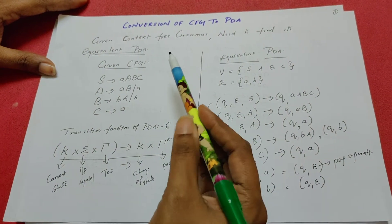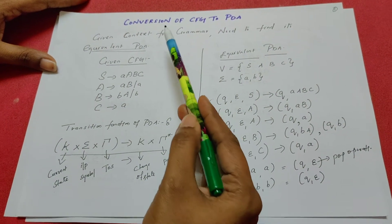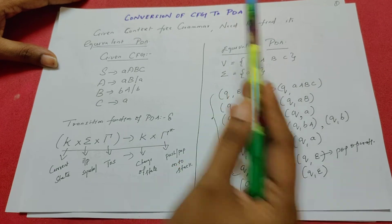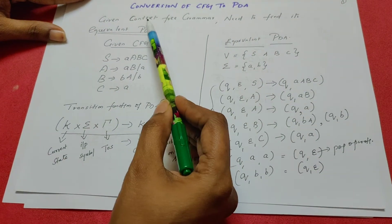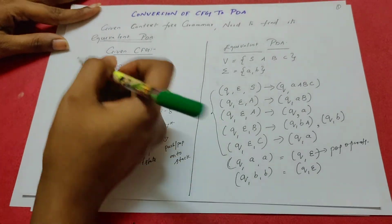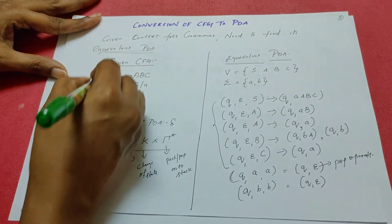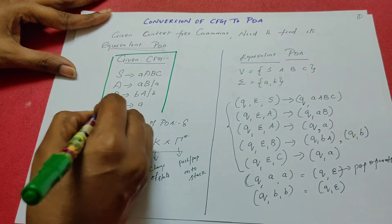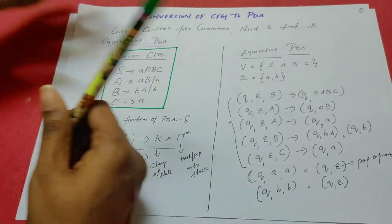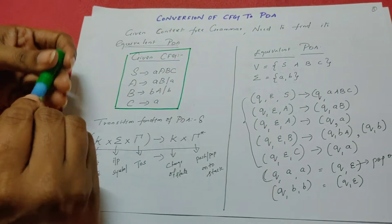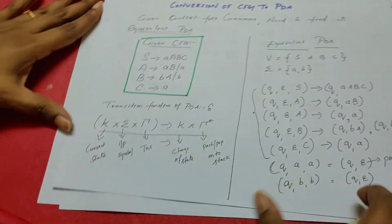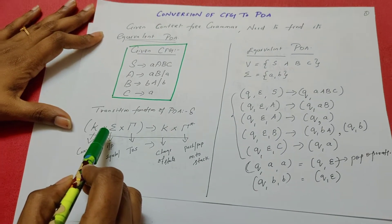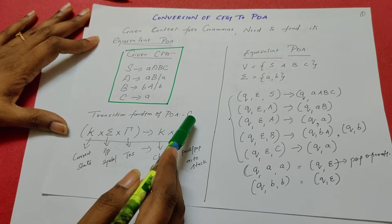Today in this video we discuss how to convert a given context-free grammar to a pushdown automata. A context-free grammar is given, and we need to find its equivalent pushdown automata. Before finding the equivalent pushdown automata, we will look at the transition function of the pushdown automata.